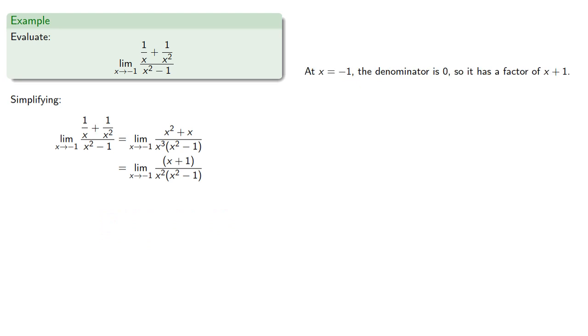So at x equals negative 1, the denominator is 0, so it must have a factor of x plus 1, and the other factor is x minus 1. We can again remove the common factor, and at x equals negative 1, the algebraic expression is defined, and so the limit is the function value, which will be...